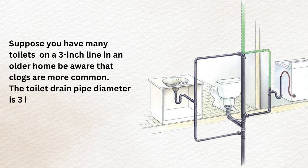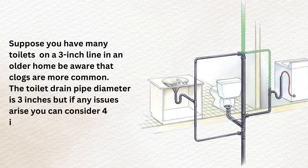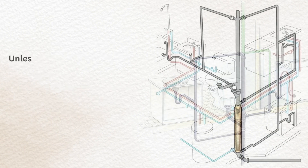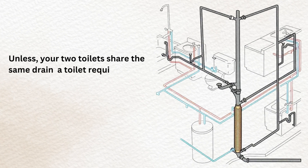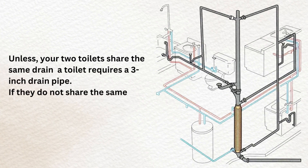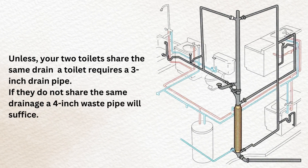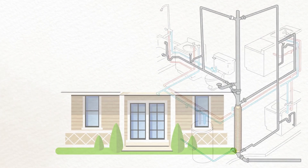The toilet drain pipe diameter is 3 inches, but if any issues arise, you can consider 4 inches. Unless your two toilets share the same drain, a toilet requires a 3-inch drain pipe. If they do not share the same drainage, a 4-inch waste pipe will suffice.